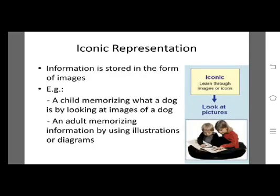The second stage is called iconic, where learning can be obtained through using models and pictures. Iconic representation, also called pictorial stage or photographic memory, is where information is stored in the form of images. For example, a child memorizing what a dog is by looking at images of a dog, or an adult memorizing information by using illustrations or diagrams. The learner can now use mental images to stand for certain objects or events, and iconic representation allows one to recognize objects when they are changed in minor ways.